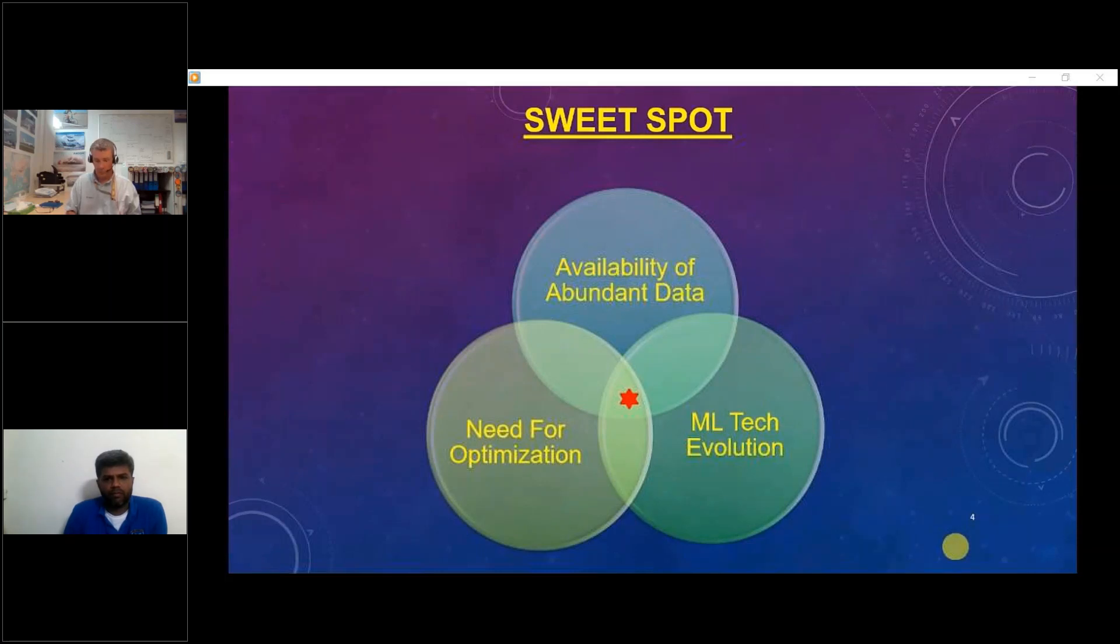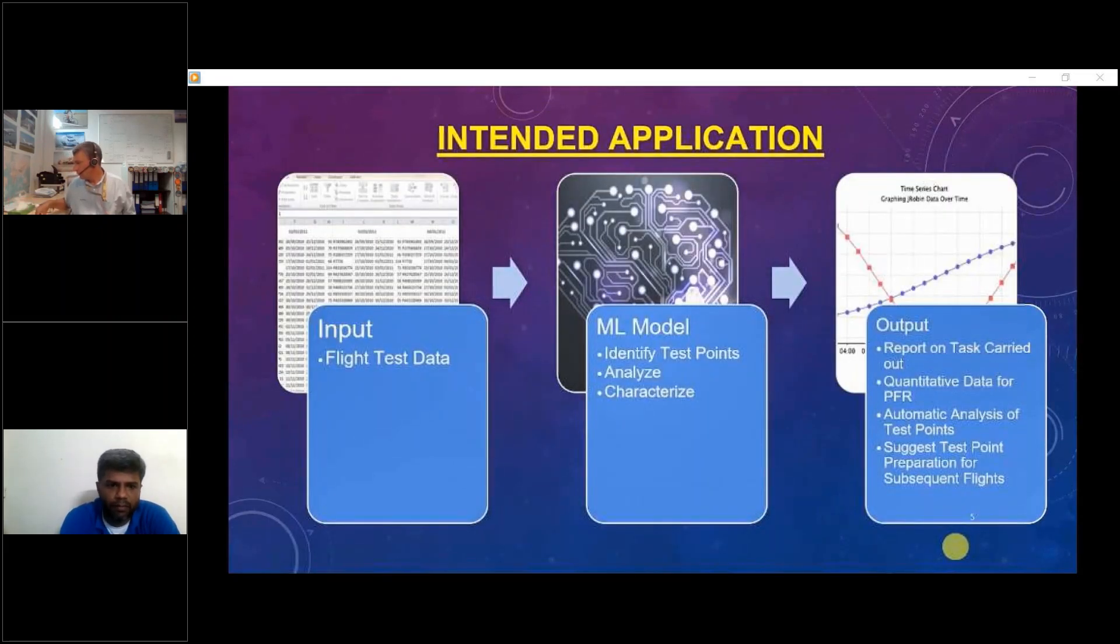Now I would say that we are in a sweet spot, where we have abundant data which is available on one hand. On the other hand, we have the ML technology, which has evolved leaps and bounds, especially over the last decade. When you see these in the light of the need for optimization, we are in the sweet spot, wherein we need to converge the ML technology which is available with the kind of data analysis we do.